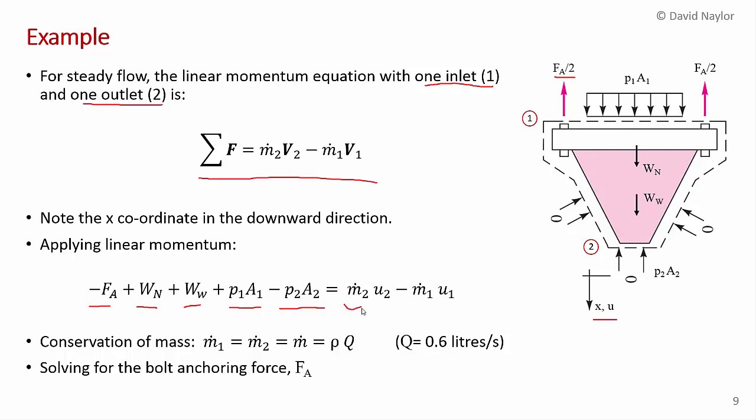And that's got to equal the rate of change of the fluid momentum. This is the rate at which momentum flows out. This is the rate at which momentum flows in. And we have a steady flow situation. There is no mass accumulating inside the control volume. So the rate at which mass flows in equals the rate at which mass flows out. And I'm just going to call that m-dot, which is equal to rho Q.